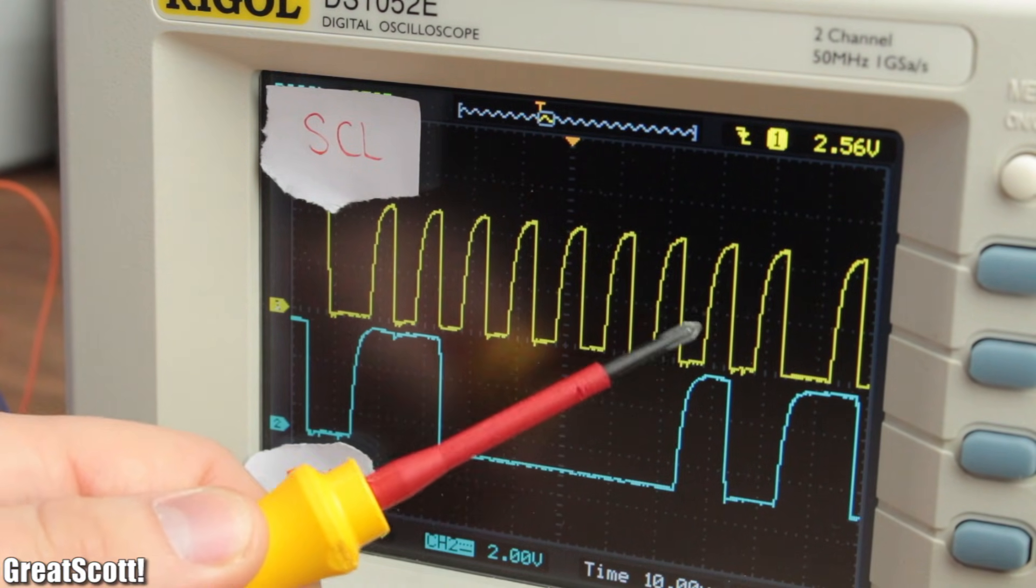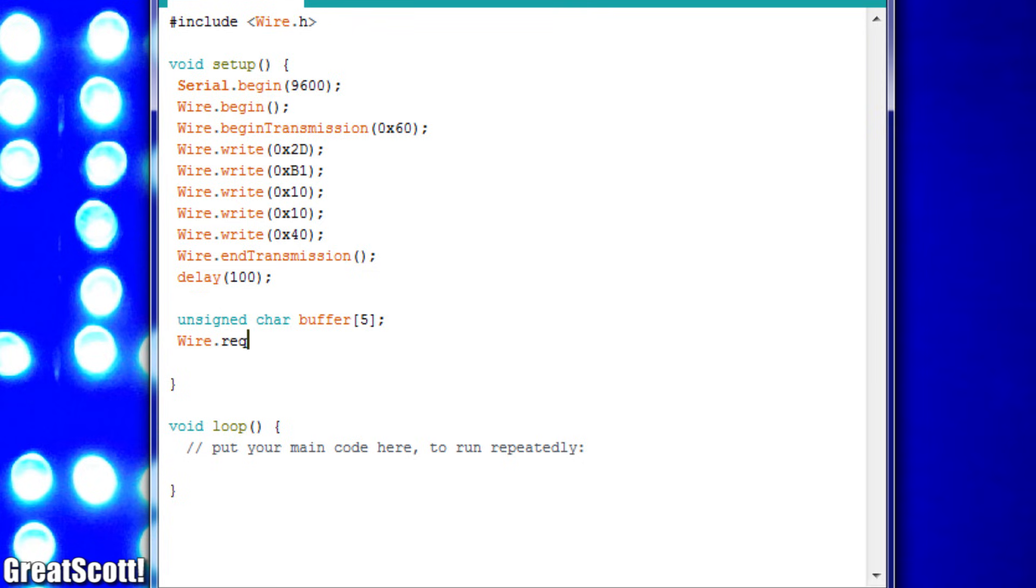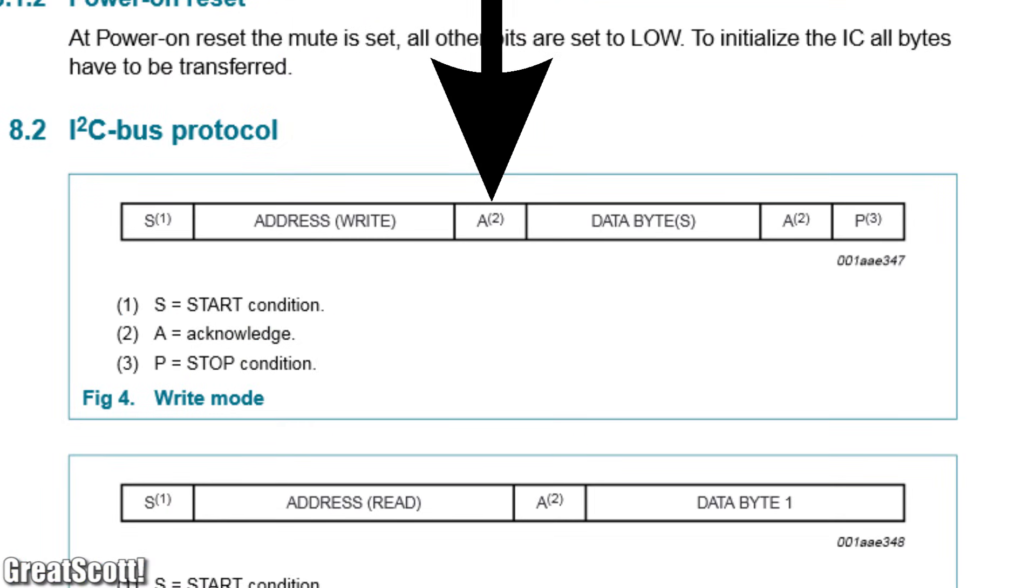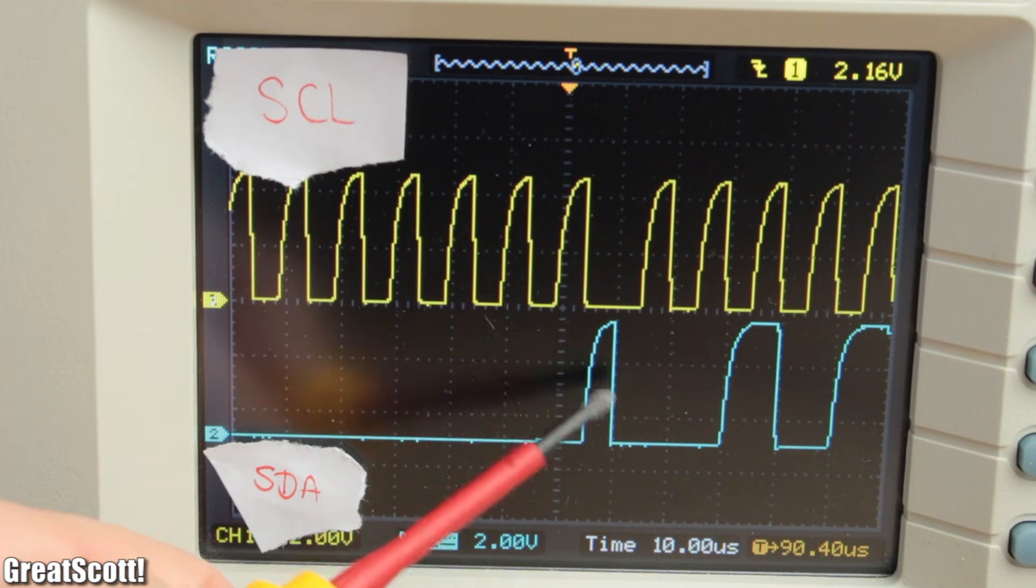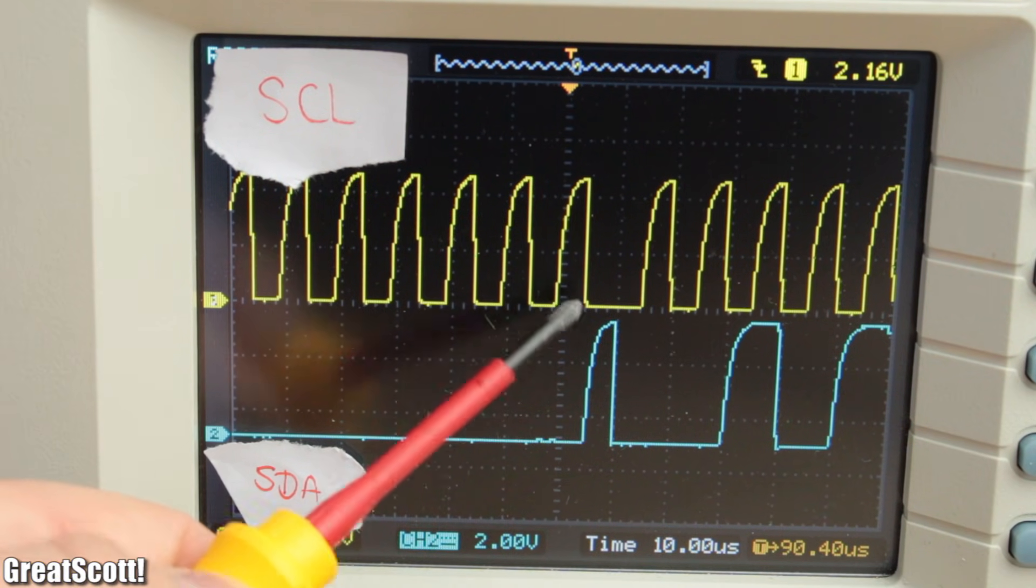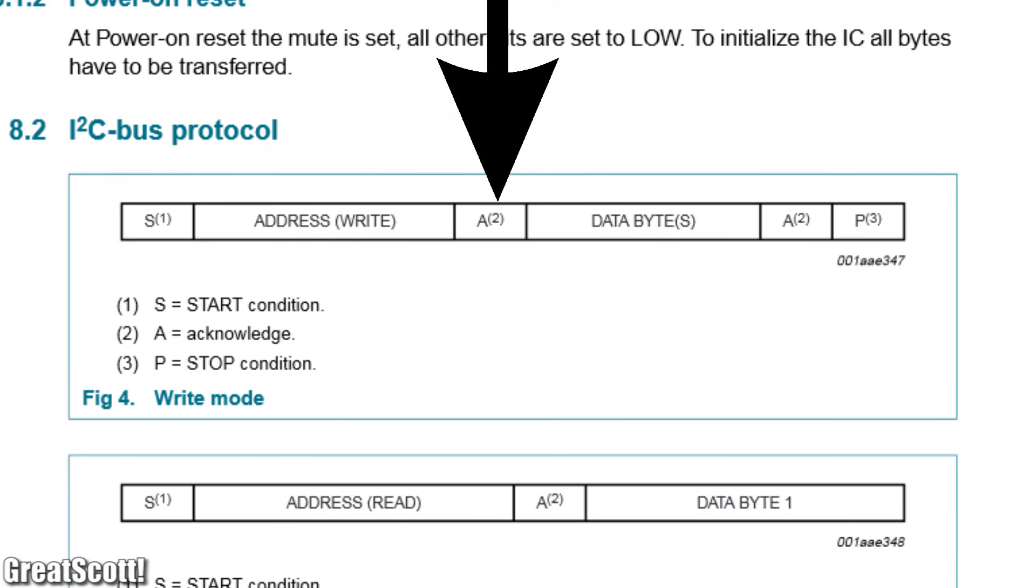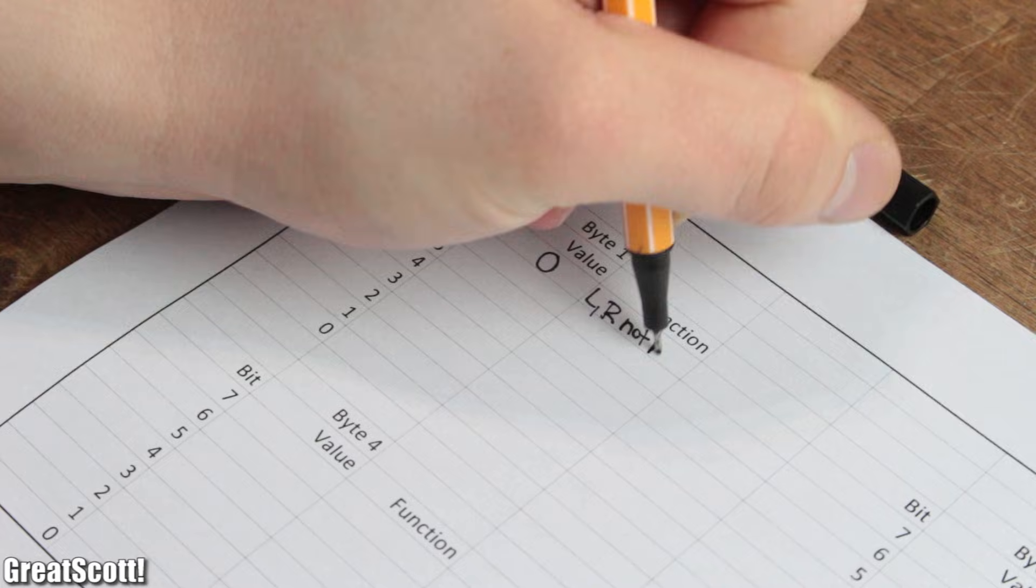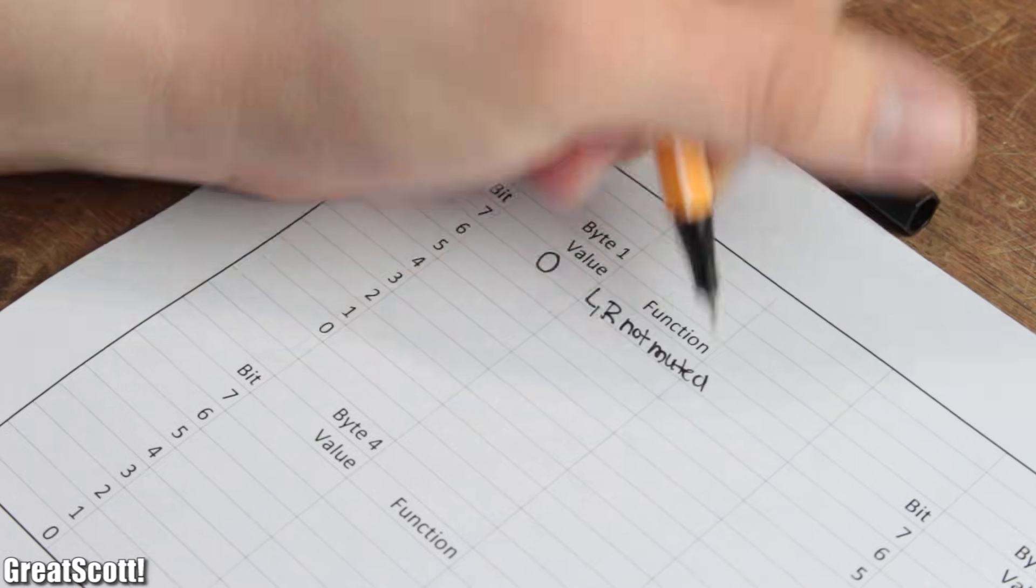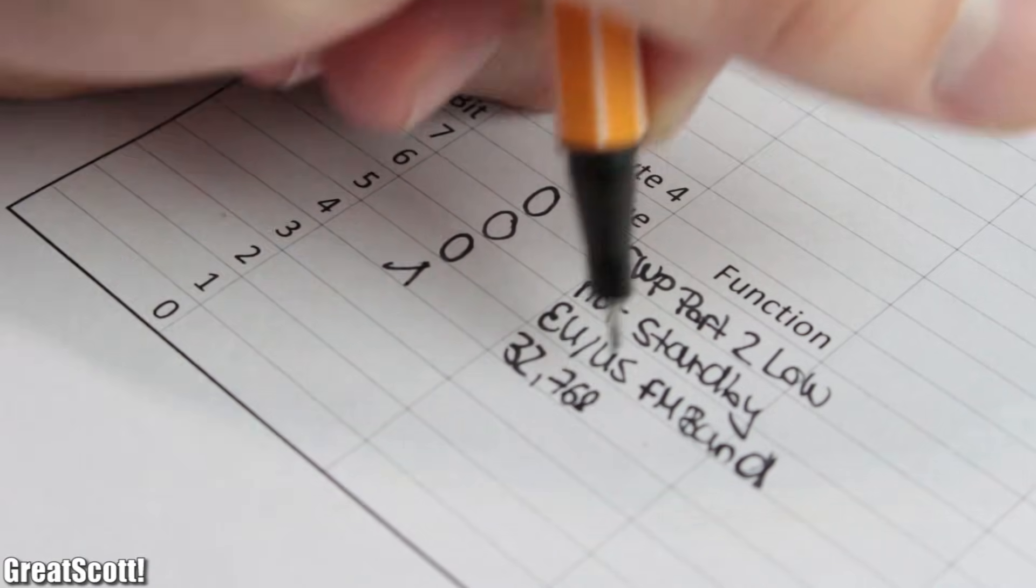Once again, the library handles this on its own depending on whether you choose begin transmission or request from. An acknowledge bit is the next, which is sent out by the slave to let the master know that it is ready for the next byte (8 bits of data). And here starts the fun part, since we need to send our 5 data bytes which actually tell the slave what to do.